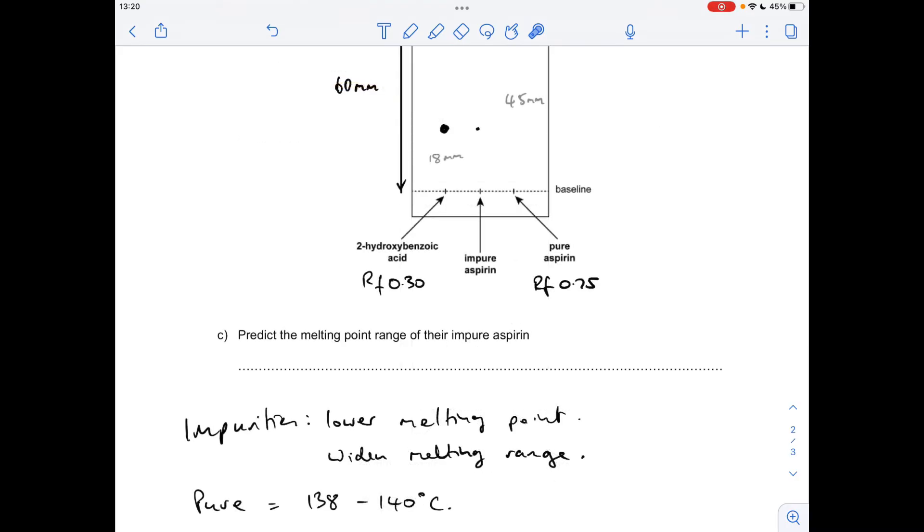Finally, predict the melting point range of the impure aspirin. Impurities lower the melting point of a substance but also widen the melting range. You'll notice from the table, pure aspirin has a melting point of 138 to 140 degrees C. The fact that it's melting over this narrow range of 2 degrees C means it's pure.